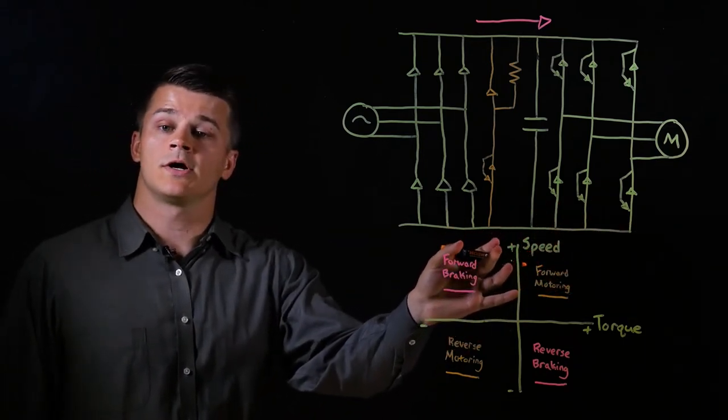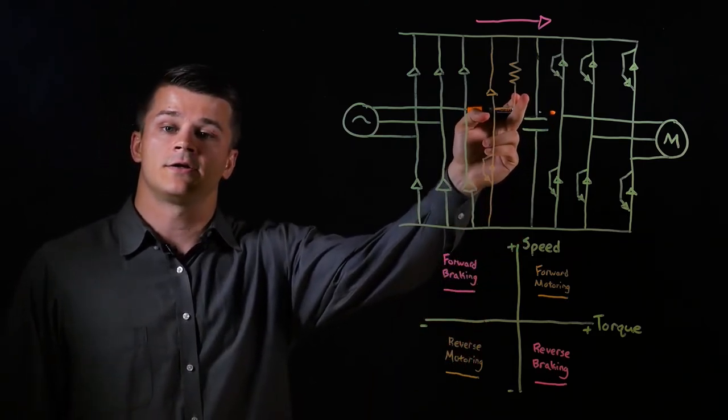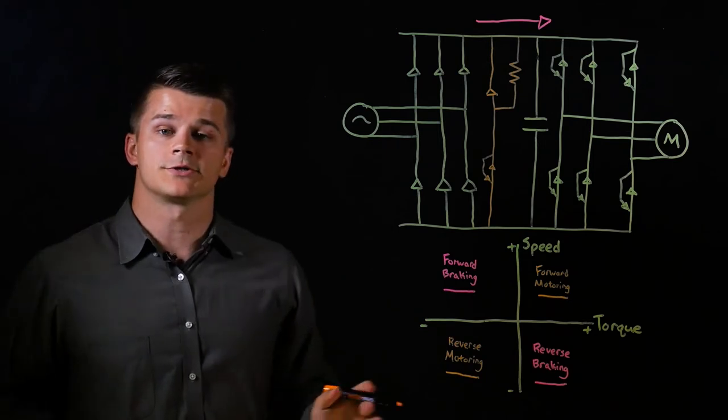How the braking resistor circuit works is the transistor switches on once the voltage reaches a certain level, and then the excess energy is dissipated across the resistor as thermal energy or heat.